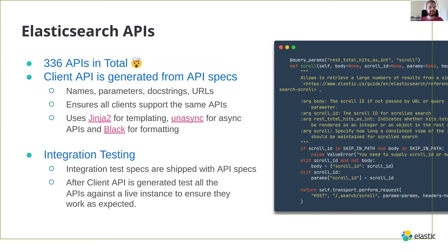All the clients do this — a lot of it can be transported across different languages, so Elasticsearch Ruby is also generated from API specs to ensure every client has the same API and features. Another great part of generating these APIs is that we also have integration testing specs which call APIs with different parameters and verify everything works on a live instance. That gives you a really high bar of assurance that your generated APIs are correct. Writing every edge case for all 336 APIs manually would be a lot of work.